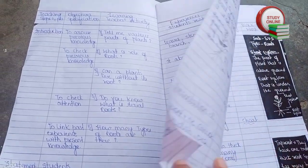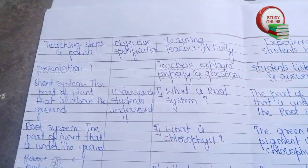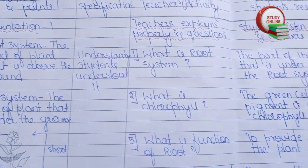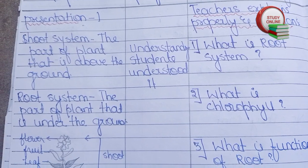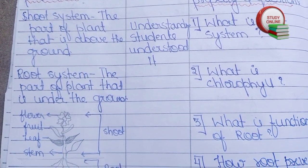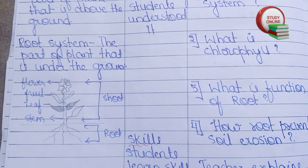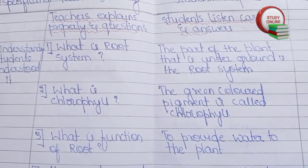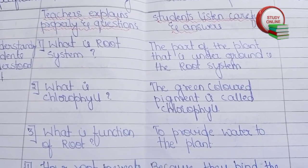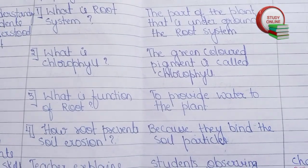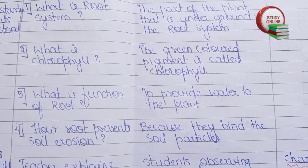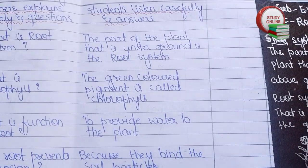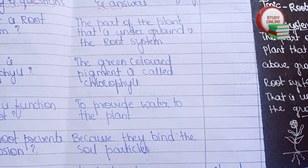Now let's turn the page. Here you can see Presentation Part 1. We have to explain everything properly for about four to five minutes — shoot system and root system. After that, we ask questions related to that. Here you can see a list of four questions: 'What is chlorophyll?', 'What is the function of root?', and similar questions, along with the answers we expect from students.